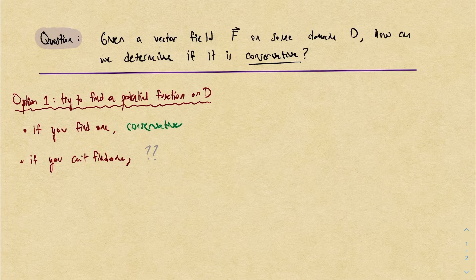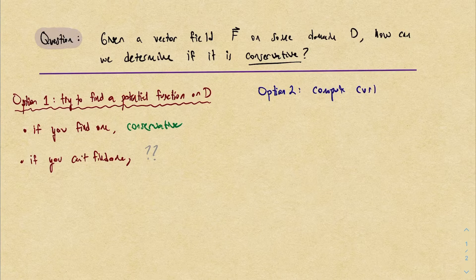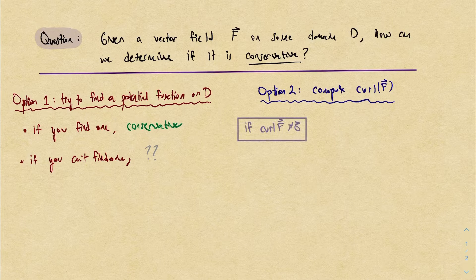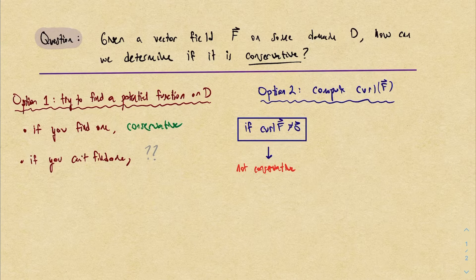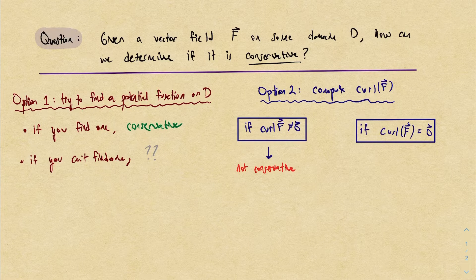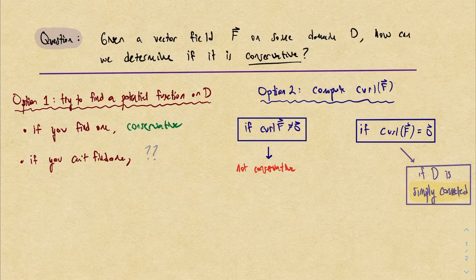It's difficult in practice to demonstrate by hand that no such function can exist. The second option is going to be the focus of this video, which is to compute the curl of the vector field. One of the key facts is that if the curl is not zero, then automatically the vector field is not conservative.